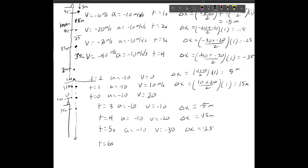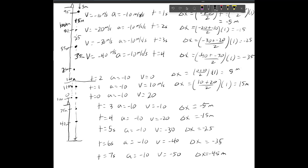At time equals 6 seconds, acceleration is negative 10 and velocity is negative 40. Using the same equation, it falls 35 meters to reach 40 meters above the ground. Then somewhere just before time equals 7 seconds, it hits the ground — velocity would be negative 50 and displacement would be negative 45 meters, but because it's only 40 meters above the ground, it impacts just before 7 seconds. At 7 seconds it would be below the ground.